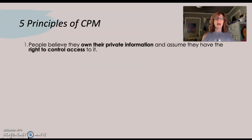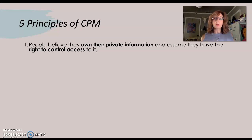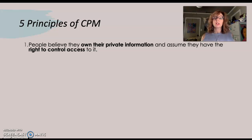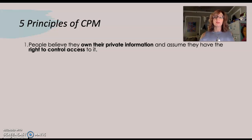There are five principles or axioms. The first: people believe they own their own private information and assume they have the right to control access to it. In other words, we believe that information about ourselves belongs to us, and we get to decide who gets access to it and who doesn't. We have control over that. That's the first principle.